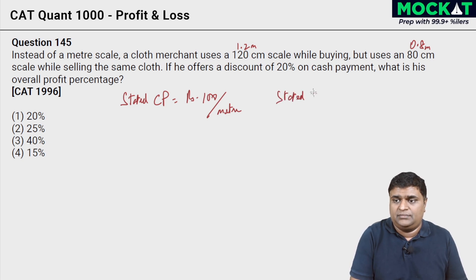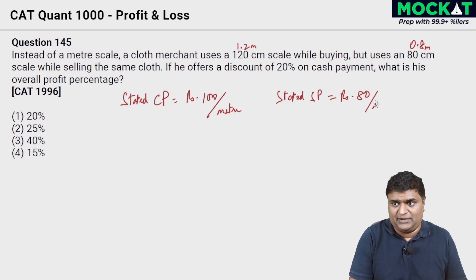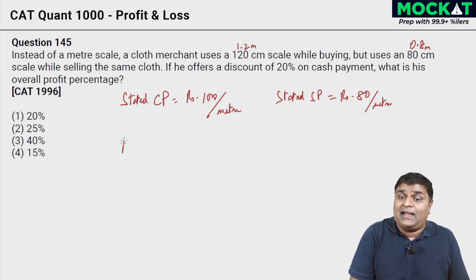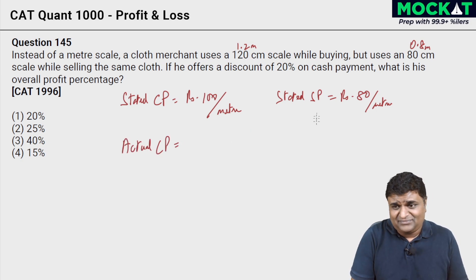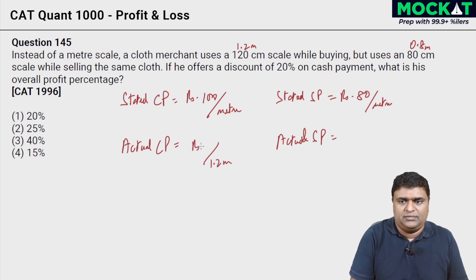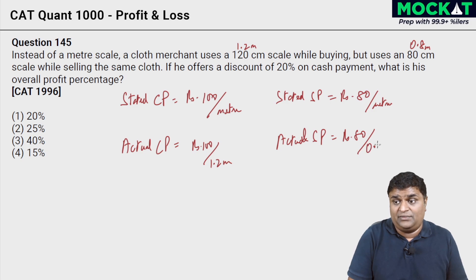Let the stated cost price equal rupees 100 per meter. With a 20 percent discount, stated selling price comes to rupees 80 per meter. Now the actual cost price: he's getting 1.2 meters for 100 rupees, so actual CP is 100 divided by 1.2 rupees per meter. Actual selling price: he gives only 0.8 meters for 80 rupees, so actual SP is 80 divided by 0.8 equals 100 rupees per meter.